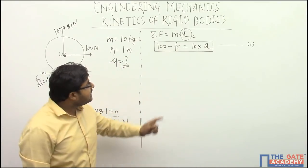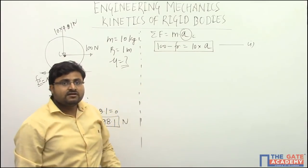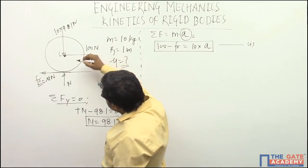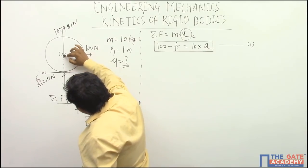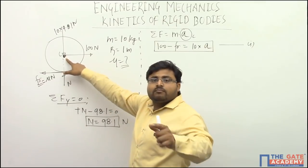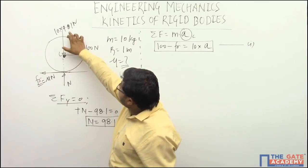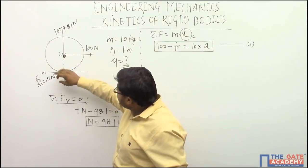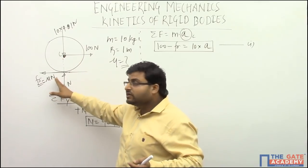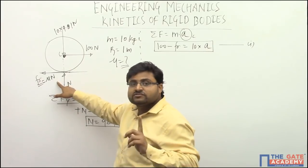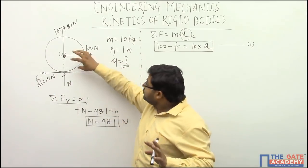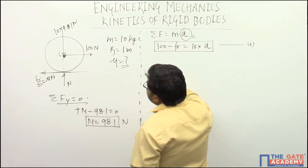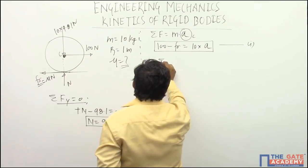We need to eliminate the frictional force to find acceleration. If we take the moment about the center C, note that N, weight, and the 100 Newton force all pass through the center, so they produce no moment. Only the frictional force provides a rotational torque — it is the frictional force that causes rotation. So we apply Newton's second law for rotation to find the frictional force.